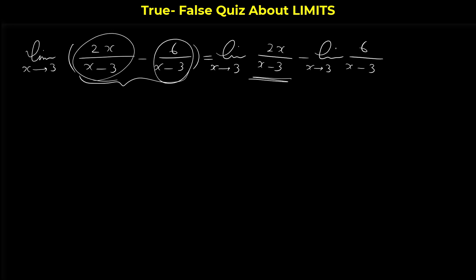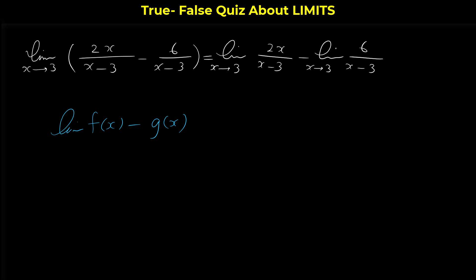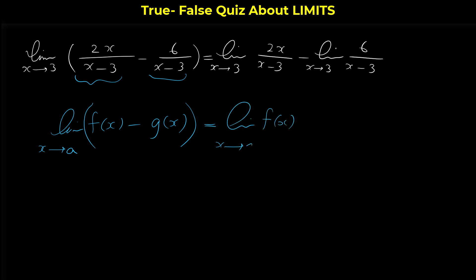Can we split a limit and write it as the limit of the first part minus the limit of the second part? Remember that in general we can write the limit of f(x) - g(x) as x approaches a as the limit of f(x) minus the limit of g(x).